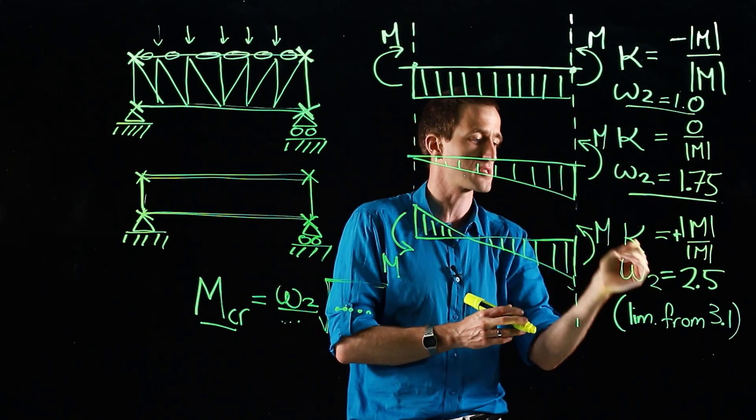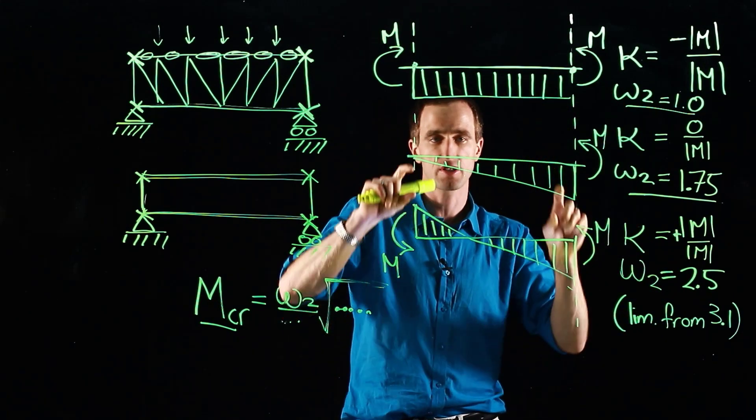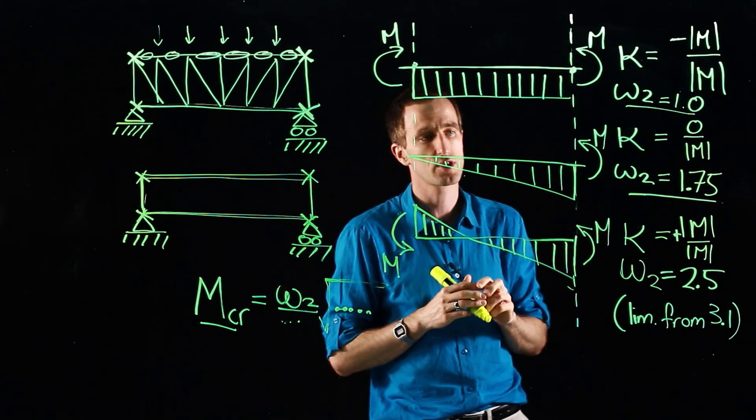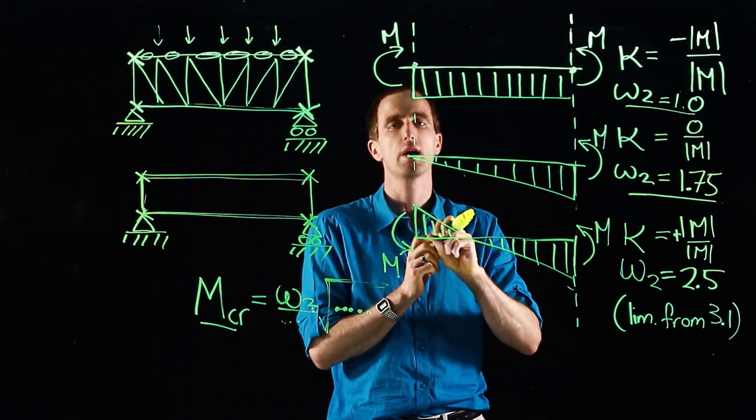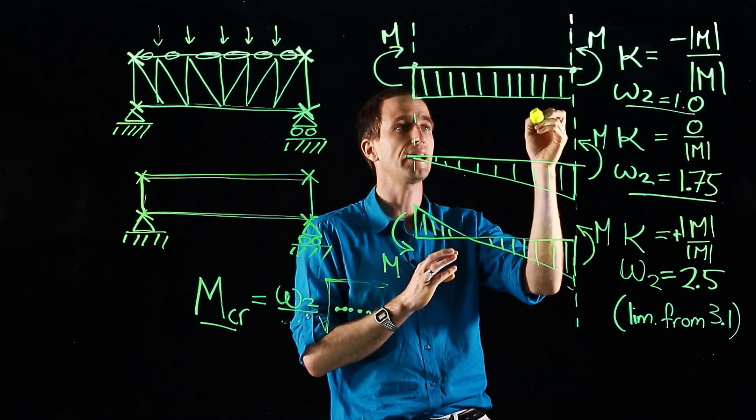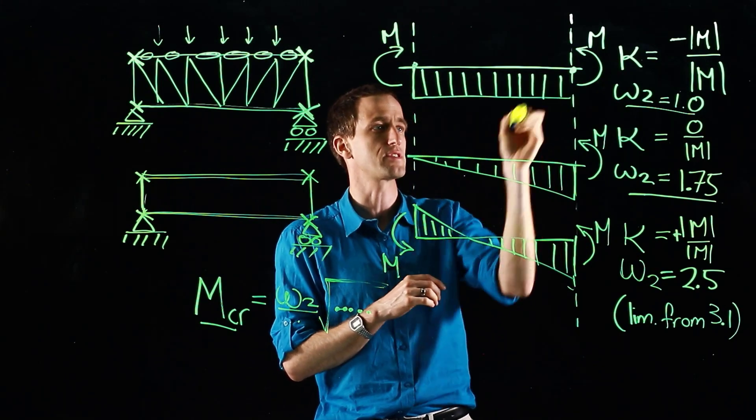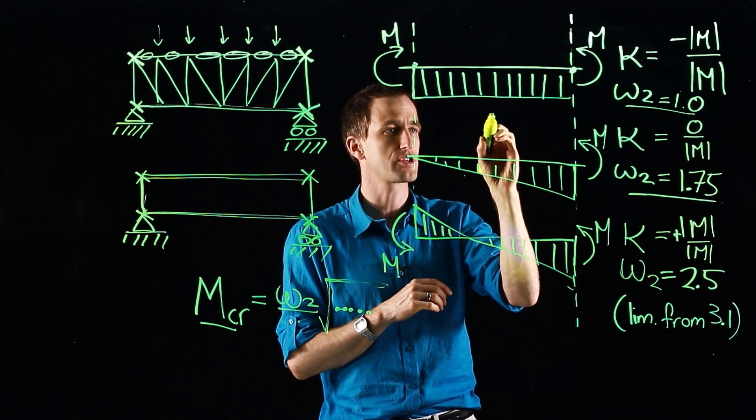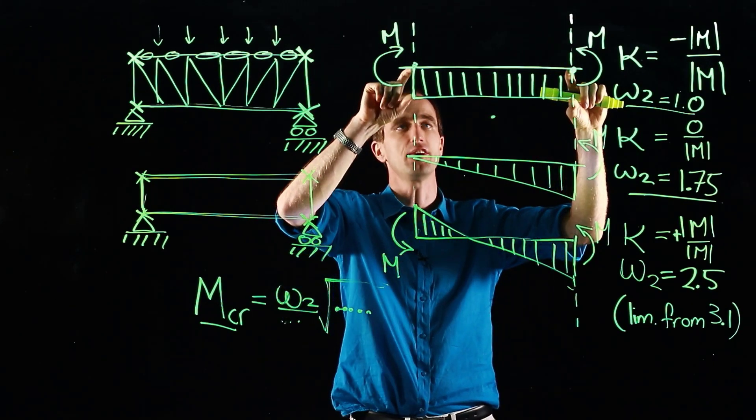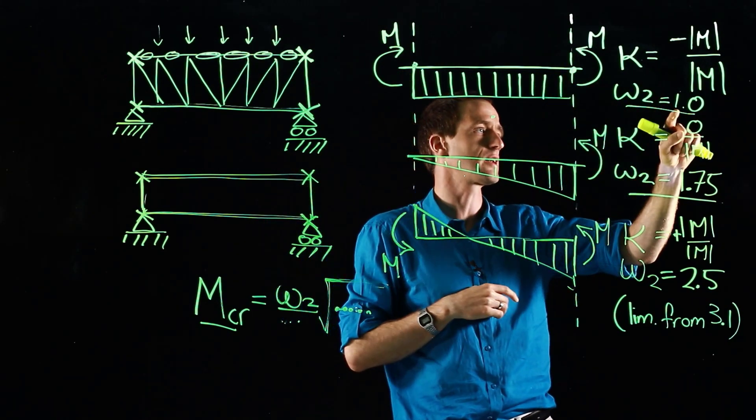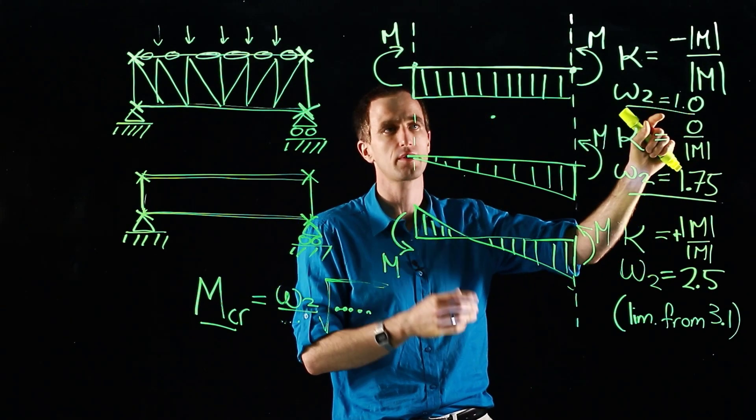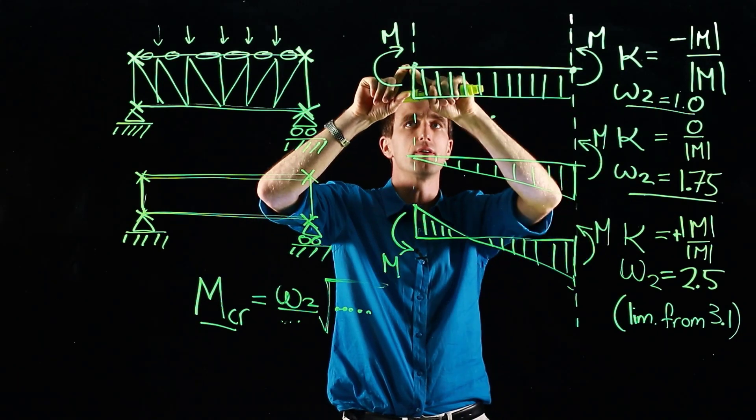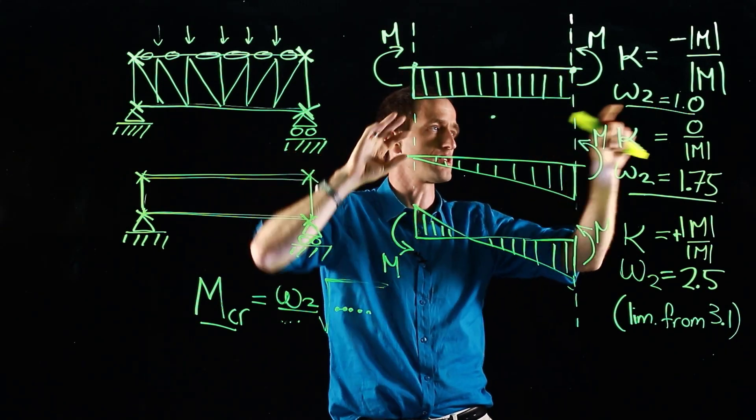And so that takes us through three specific cases and this is now just taking the end moments. But also just remember there is a clause in our South African code in terms of if the bending moment diagram is higher anywhere along the lengths, if we had this diagram and we have some position here which is a higher value than at the ends we just automatically go to one. It's a conservative way of dealing with it.